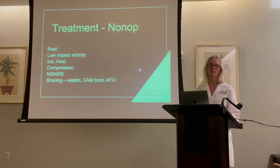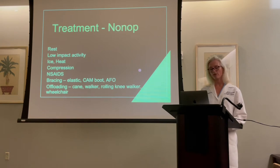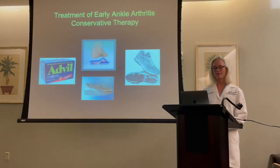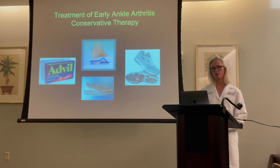Bracing is important for offering stability to a joint that is painful and may feel unstable because of the pain. Keeping off the joint by using either a cane, a walker, a rolling knee walker, or a wheelchair may be helpful. For early ankle arthritis: Advil, orthotics to help support the ankle, a rocker bottom shoe so that the rolling goes through the sole of the shoe and lessens the need for the ankle to move, and cushioning — because walking barefoot or in hard sole shoes adds more impact and trauma to the joint with every step.